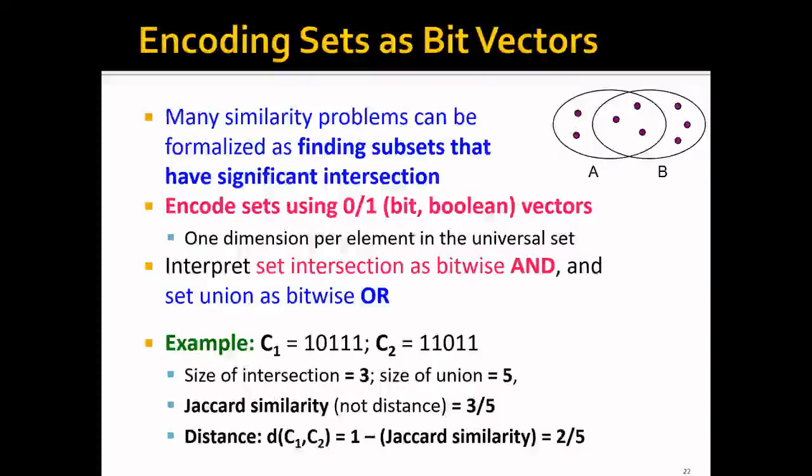Recall that many similarity problems can be formalized as finding subsets that have significant intersections. For example, if we look at these two sets, the larger the intersection is, the more similar these sets are. So we can basically encode sets using 0/1 or bit boolean vectors. And each of the dimensions will represent one element in the universal set. And we can interpret the set intersection as bitwise AND, and set union as bitwise OR.